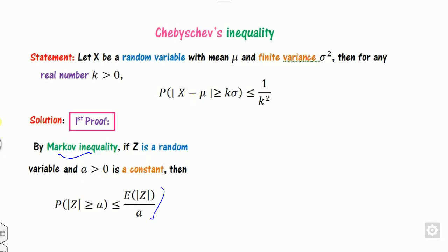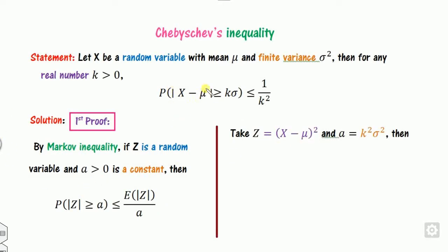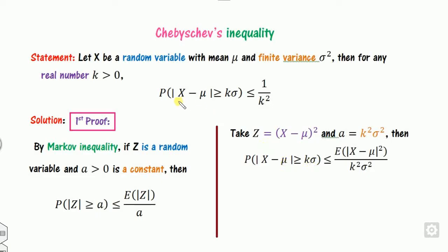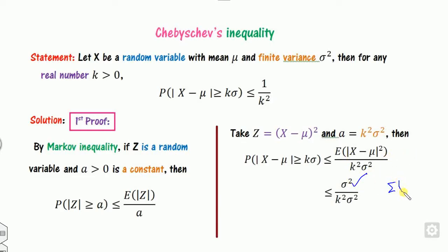To prove it, compare the two inequalities. We can take Z as (x minus mu) squared, since it is a non-negative quantity, and take a as k squared sigma squared, which is a positive quantity. Substituting Z and a into the Markov inequality, the left-hand side becomes the probability expression we need. The numerator on the right-hand side is the expected value of (x minus mu) squared, which is nothing but the variance — sigma squared. So sigma squared cancels out, and the remaining right-hand side becomes 1 by k squared. That is the proof of the Chebyshev inequality via the Markov inequality.